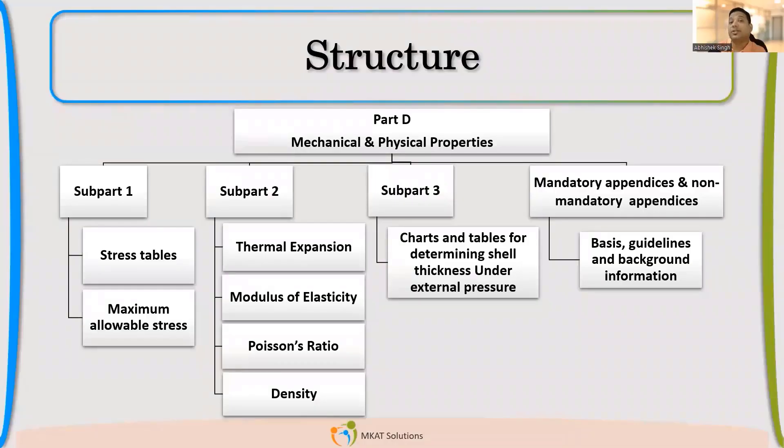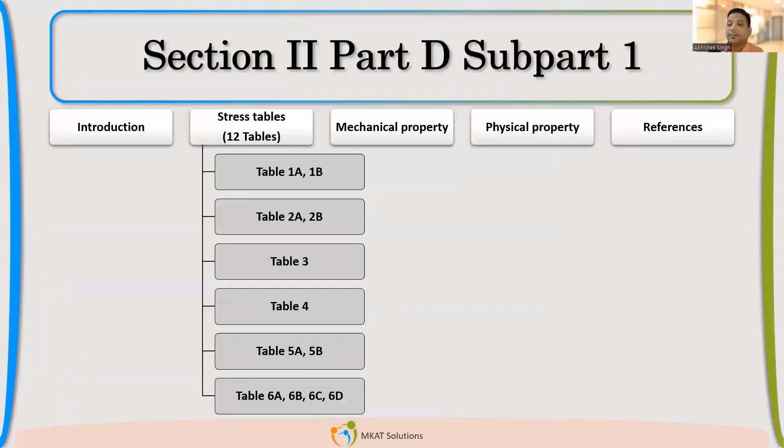Now we are going to see the structure of Section 2 Part D. Subpart 1 is mechanical properties. Subpart 2 is physical property. Subpart 3 is the external pressure calculation charts. These are the three subparts. Then there is mandatory and non-mandatory. We will see about that. Now if we see in Subpart 1, there are several tables.